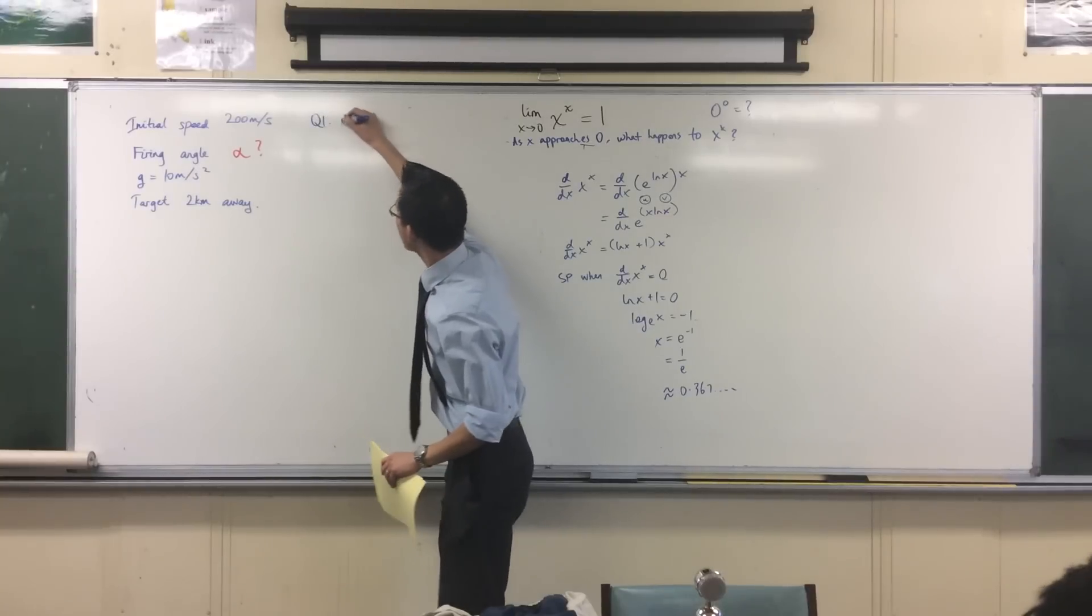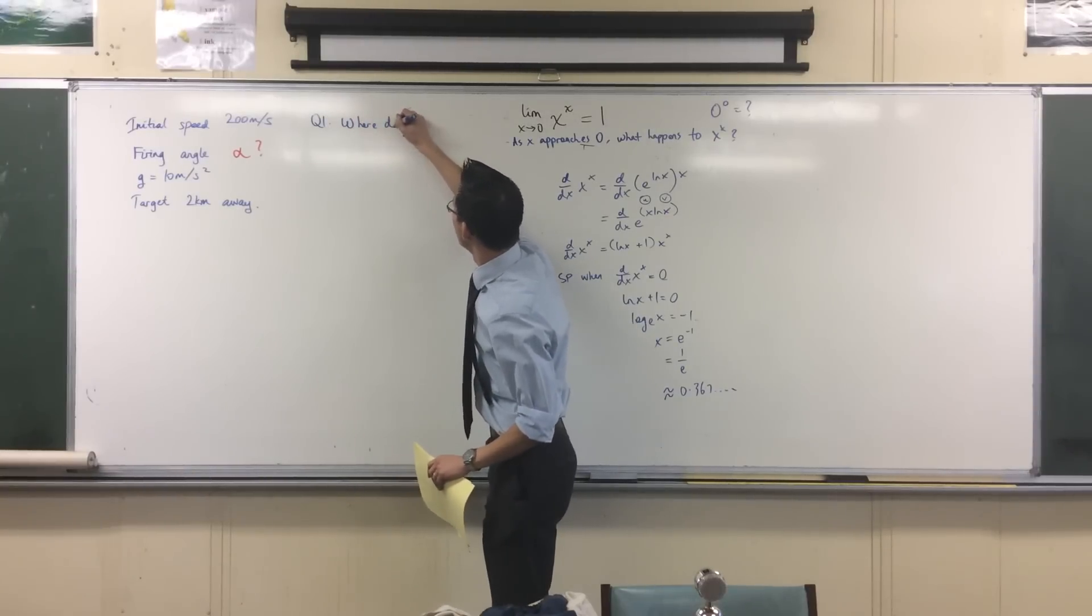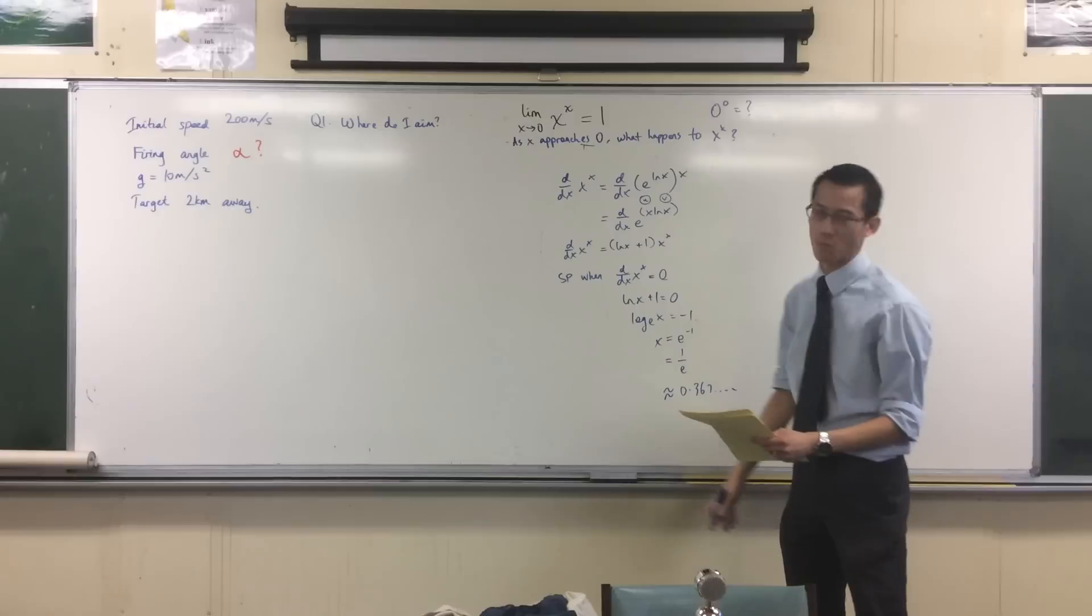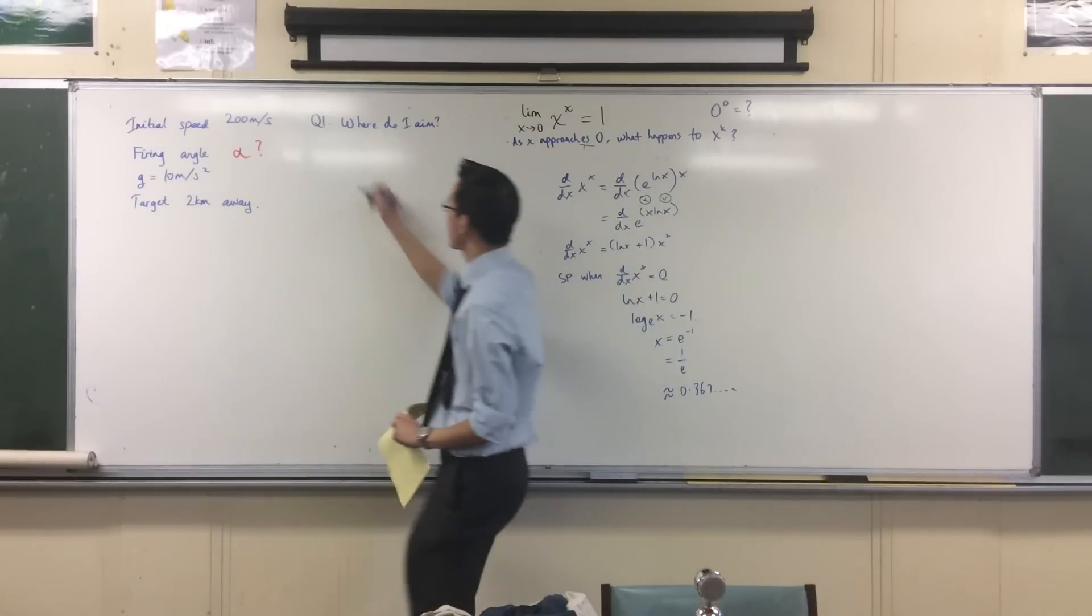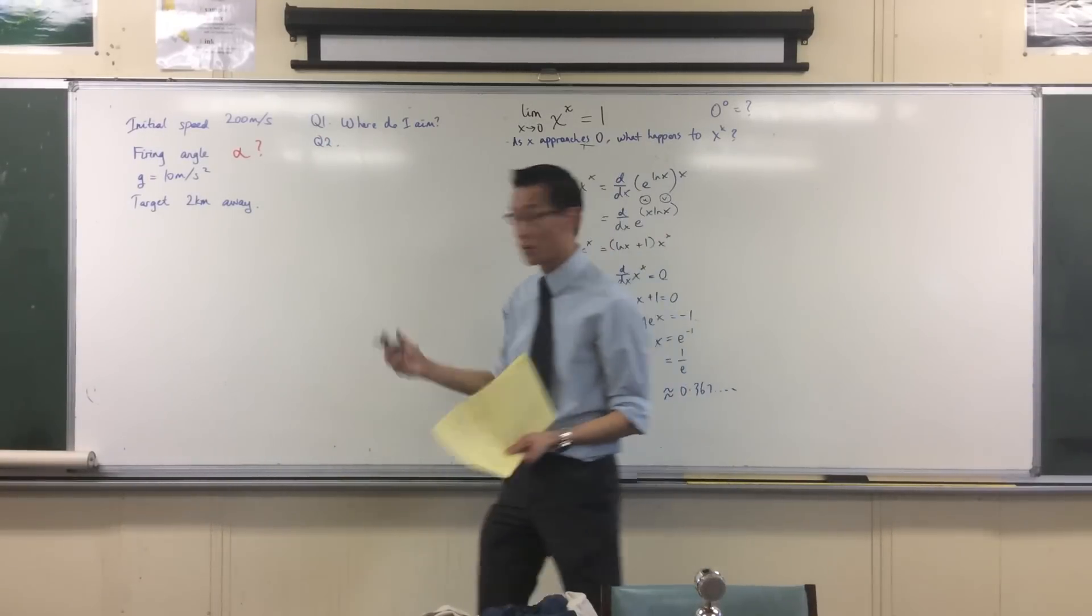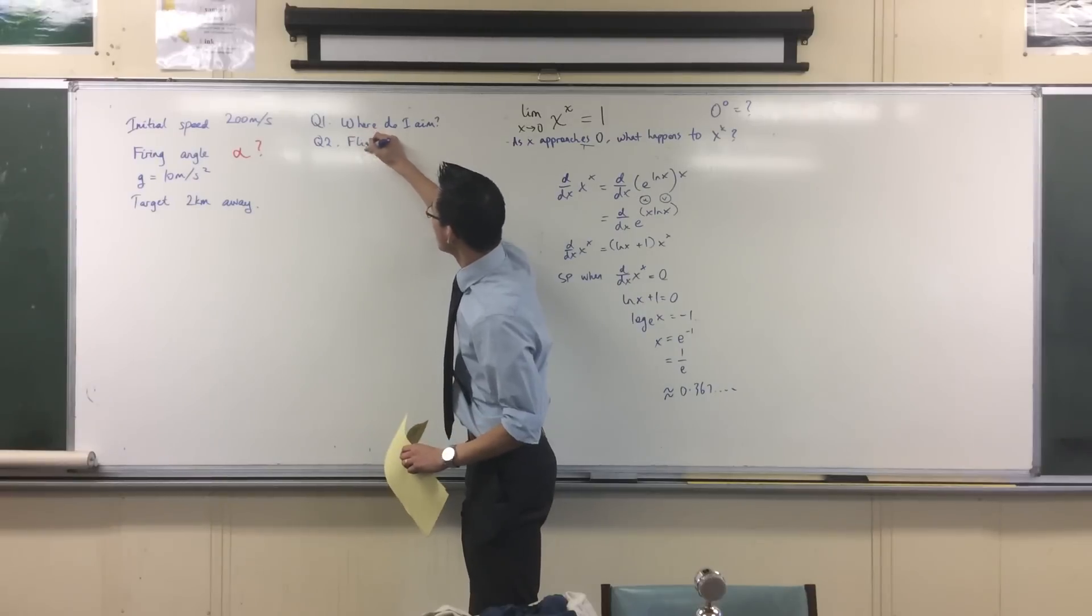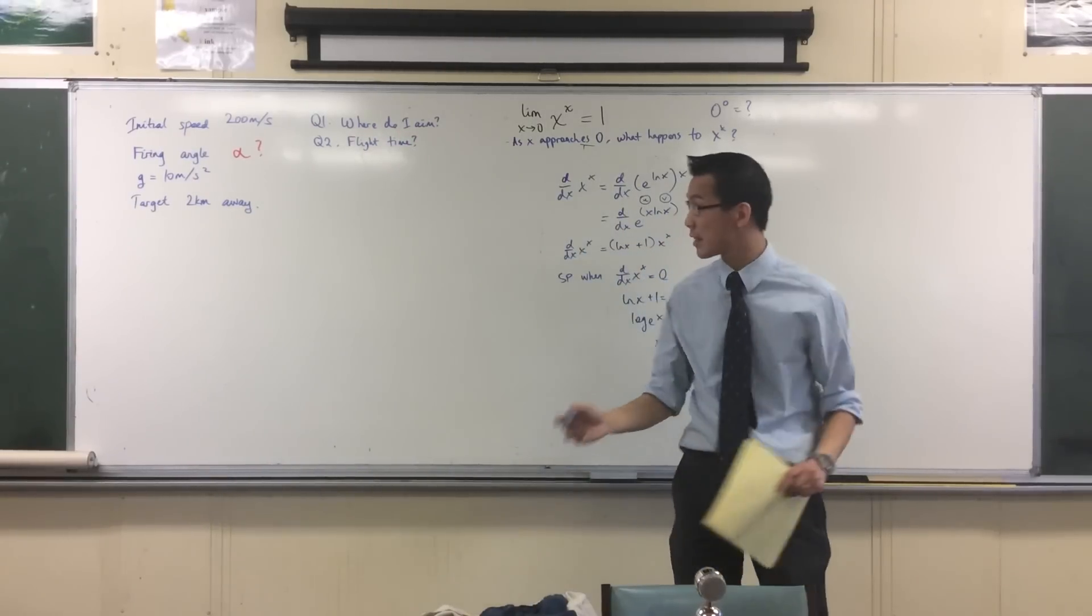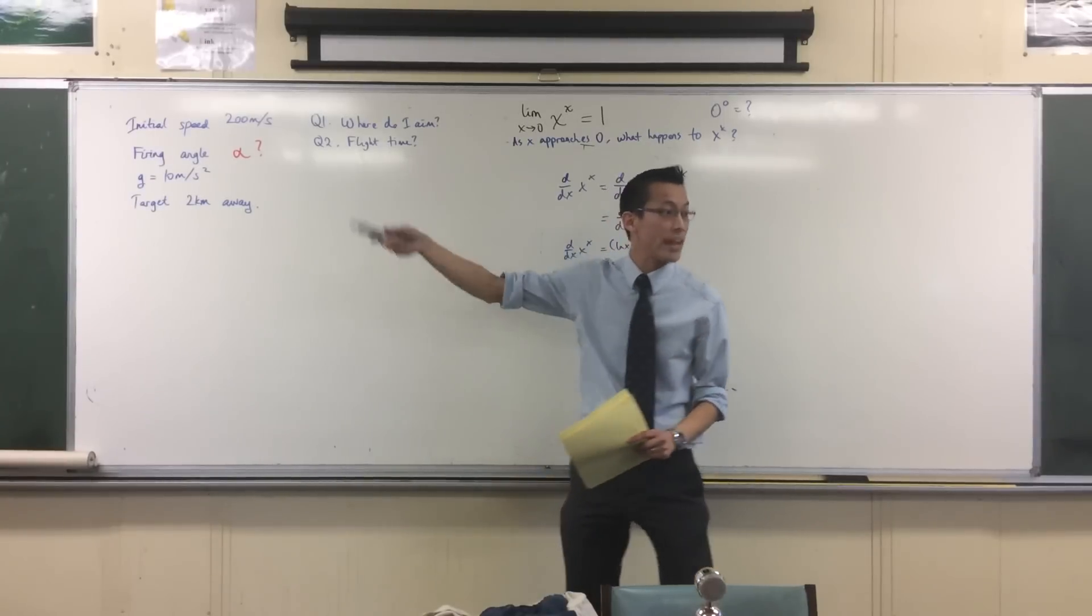Question one: where do I aim? I want to hit this target, where should I point the cannon? Question two is something we call flight time, which means how long will that projectile be in the air, assuming that I fire it in the right direction and it does hit the target.